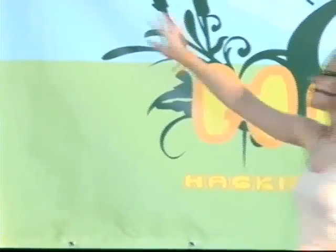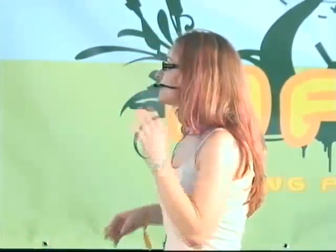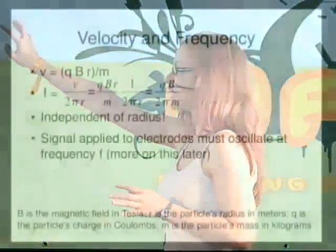There's the velocity equation on top. There's also the cyclotron frequency — how many times per second the particle goes around the circumference of the cyclotron. That's the velocity divided by 2πR. 2πR is the circumference, so velocity divided by circumference gives you frequency in per-second units. Substituting in the velocity equation, you get QB over 2πM. The most important thing is that it's independent of radius — and that's really why cyclotrons work.